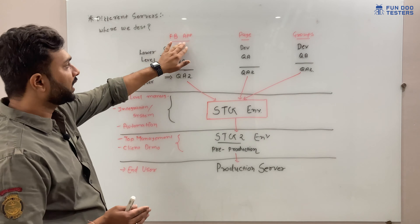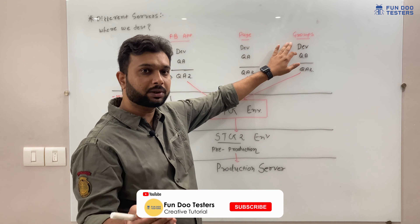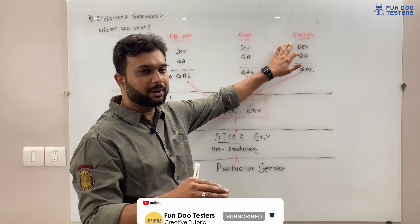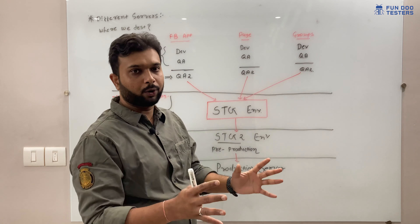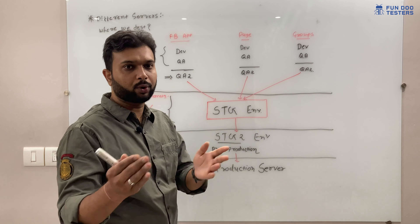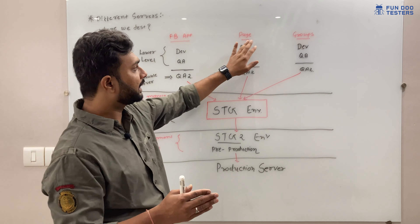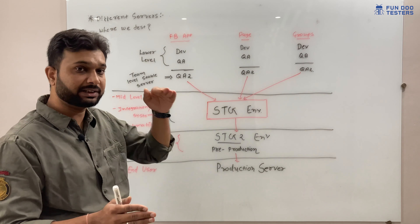I am going to discuss many layers of servers using Facebook as an example. In Facebook we have three major functionalities: first is the Facebook application that we use as end users, second is pages where anyone can create a page and post photos and videos, and third is groups where someone can create a group, be an admin, and members can post videos, photos, or documents.